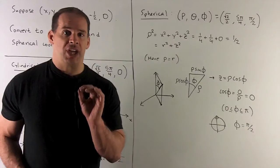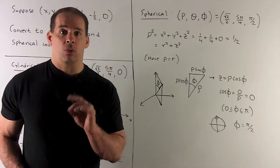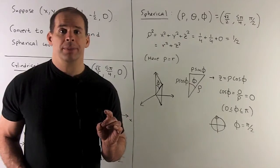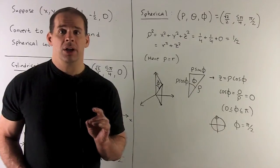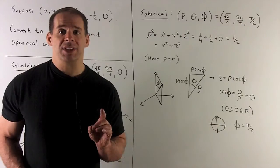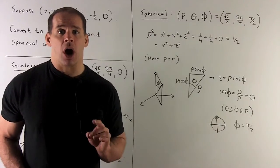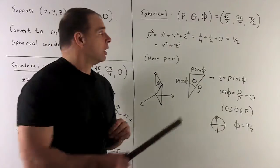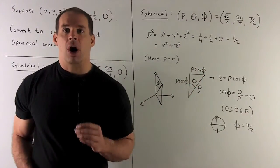Let's check: in cylindrical, rho squared equals r squared plus z squared. Z is equal to zero here, so rho squared equals r squared. Taking the square root of both sides — rho and r are positive — so rho equals r. We see that the rho we computed is the same as what we computed for r.